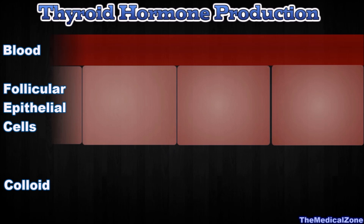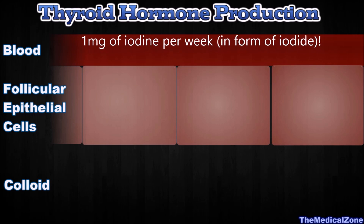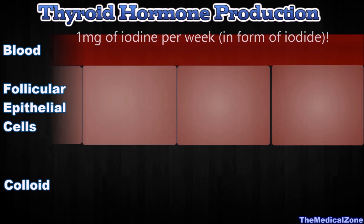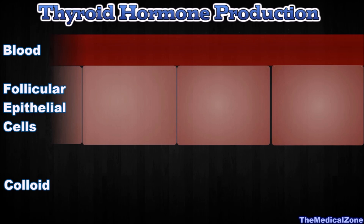To form normal quantities of thyroxine, 1 mg of ingested iodine per week, in the form of iodides, are required. About one-fifth of ingested iodides are selectively removed from the circulating blood by the cells of the thyroid gland and used for synthesis of the thyroid hormones.